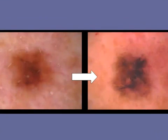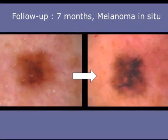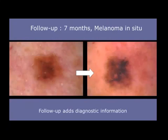It was lesion number two that was the melanoma. How do we know? Because the lesion changed — it increased in size and there's a new color, black. This is a follow-up of seven months, and we excised it, and it turned out to be a melanoma. So follow-up adds diagnostic information.